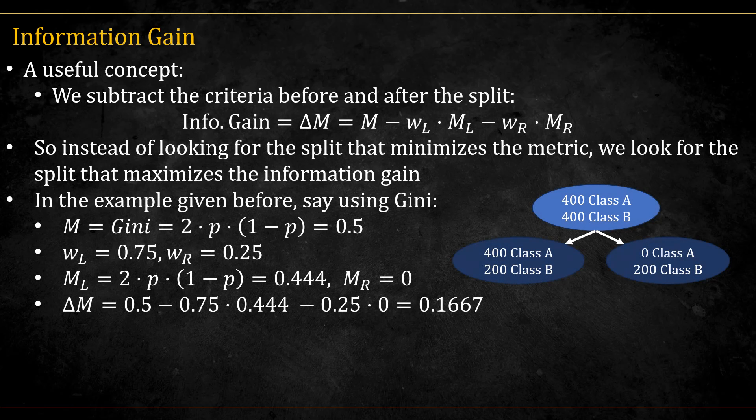A useful concept that can help us with the implementation of trees is the information gain. We subtract the criteria before and after the split, after being weighted by the proportion of observation that went to each node. M here is the metric we measured before the split. WL is the proportion of observation going to the left node. ML is the metric of the left node. And likewise, WR and MR are for the right nodes. So instead of looking for a split that minimizes the metric, we look for a split that maximizes the information gain. This is not strictly needed, but as we shall see, can help with the implementation.